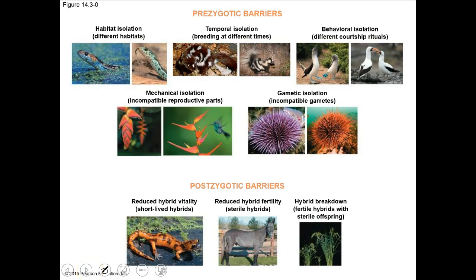So those are the prezygotic and postzygotic barriers. For an Easter egg activity: write down the prezygotic and postzygotic barriers and define them — particularly the postzygotic ones, which are a bit unusual. They have really short, nice definitions. Write those on a separate sheet, turn it in, and maybe get some extra points on your quiz.